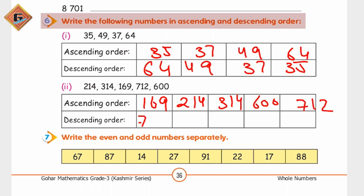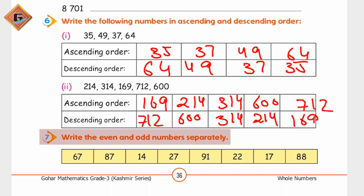Ab isko dekhte hain descending mein: highest 712, 600, then 314, 214, and last one is 169. Write the even and odd numbers separately. Even numbers wo hote hain jo 2 ke table par divide hote hain. Yeh even number, yeh even number, and yeh even number. Aur odd numbers hain yeh wale. Aap ek column bana kar inko separate kar denge.